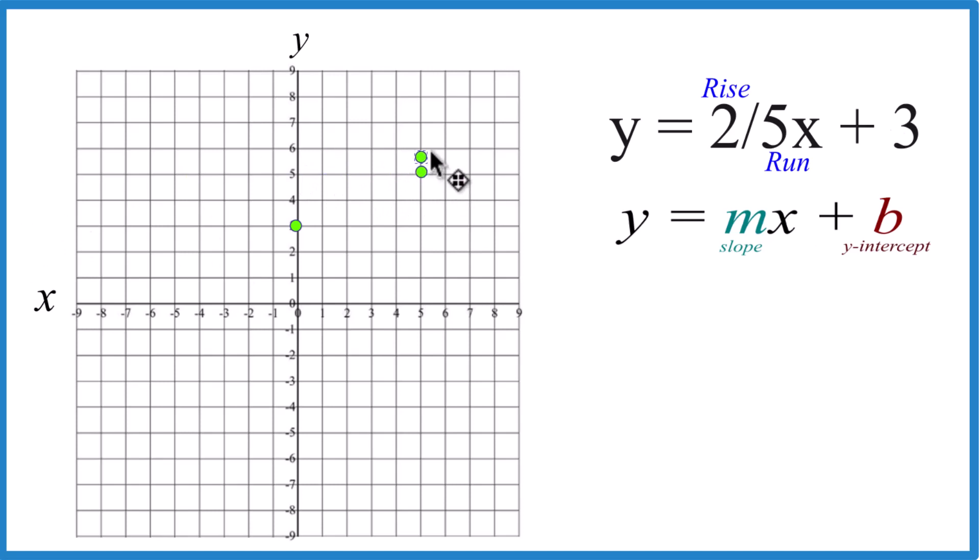From there, we can do it again. Rise one, two, run one, two, three, four, we're off the graph.